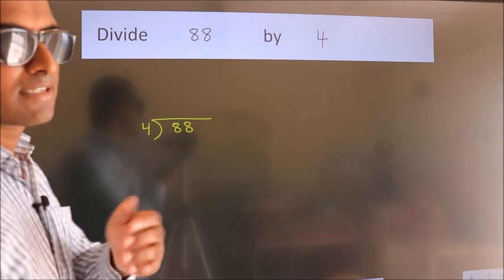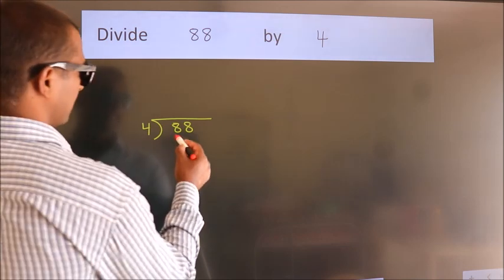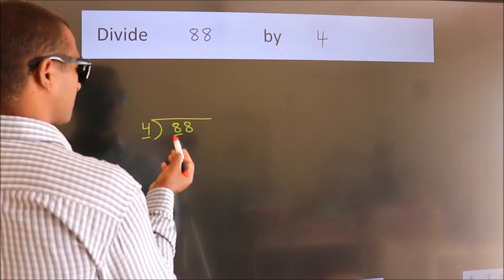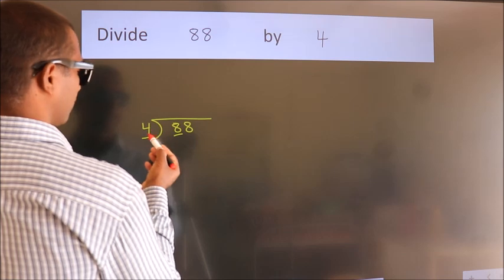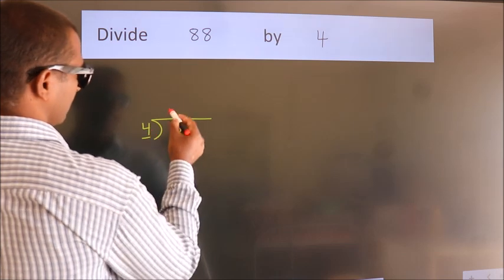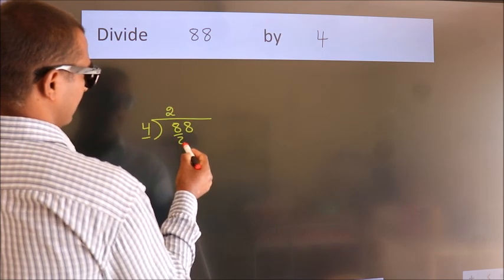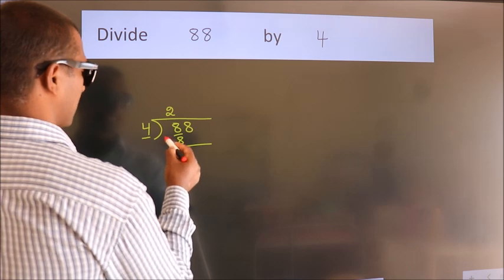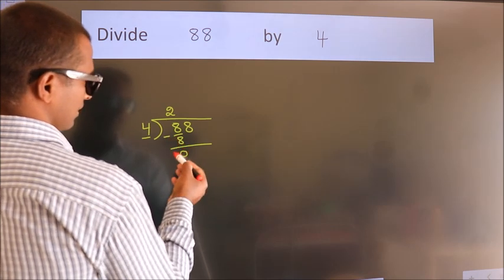Next, here we have 8, here 4. When do we get 8 in the 4 table? 4 twos are 8. Now we should subtract. We get 0.